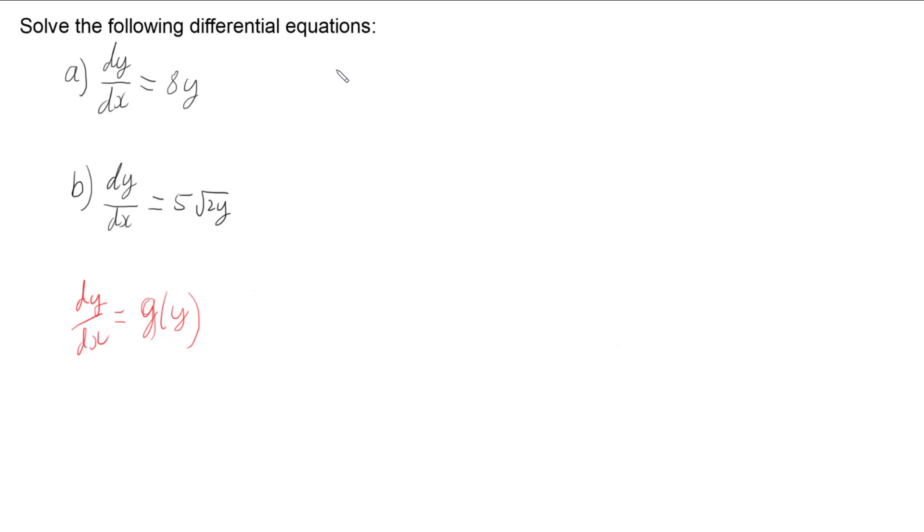Now the way we approach these is that we take all of the stuff that's related to one variable to one side and all of the stuff that's related to the other variable to the other side.